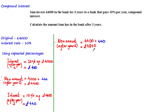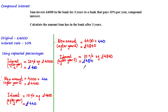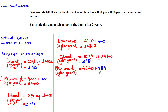To work out the interest after year three, we take 10% of £4,840, which equals £484. Adding this to the amount in her account, the total Sam has in her bank after three years is £4,840 plus £484. Using column addition, the answer equals £5,324.